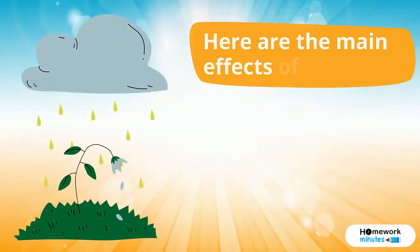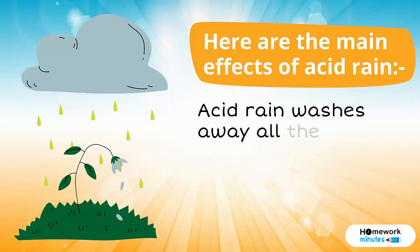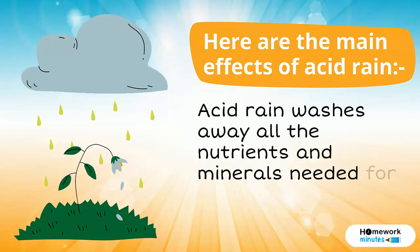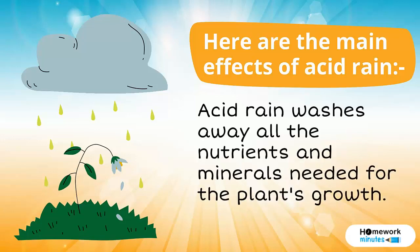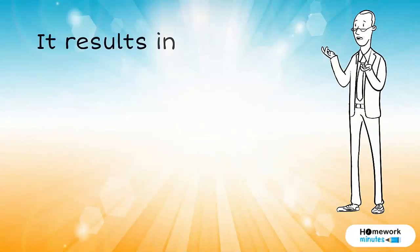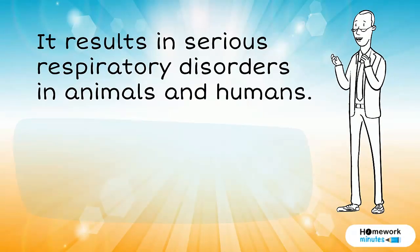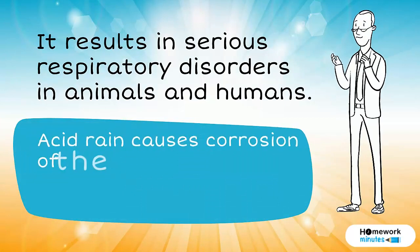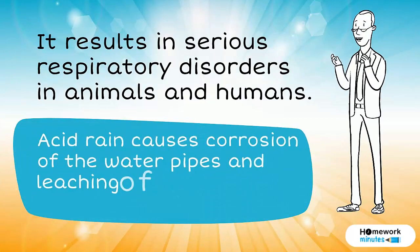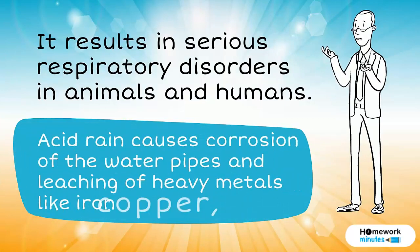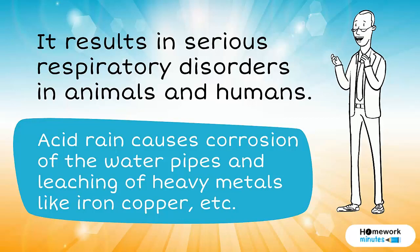Here are the main effects of acid rain. Acid rain washes away all the nutrients and minerals needed for the plant's growth. It results in serious respiratory disorders in animals and humans. Acid rain causes corrosion of the water pipes and leaching of heavy metals like iron, copper, etc.